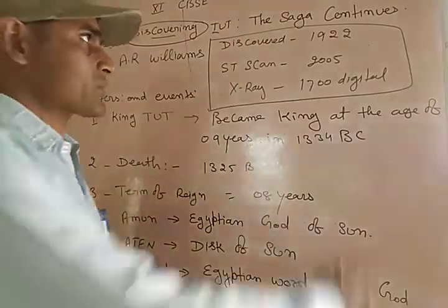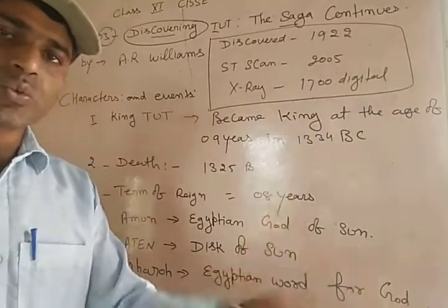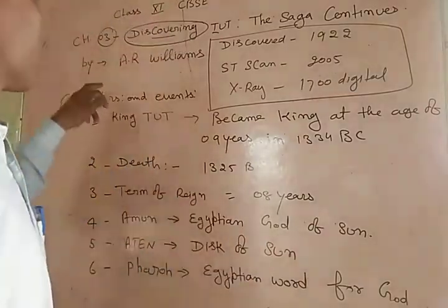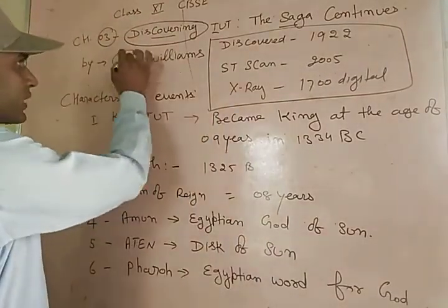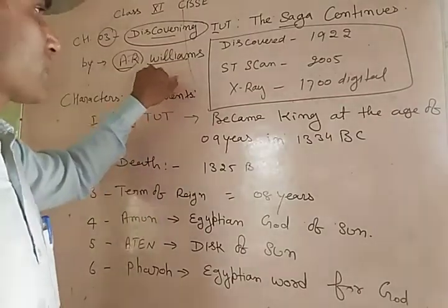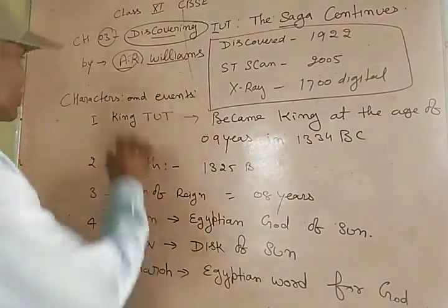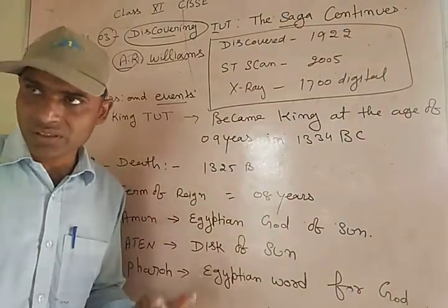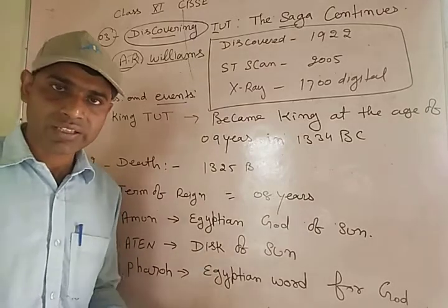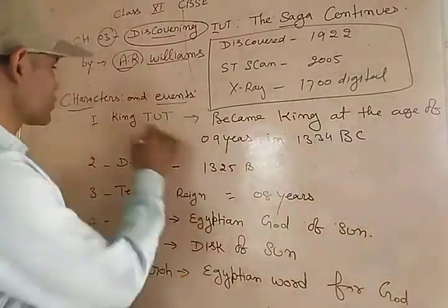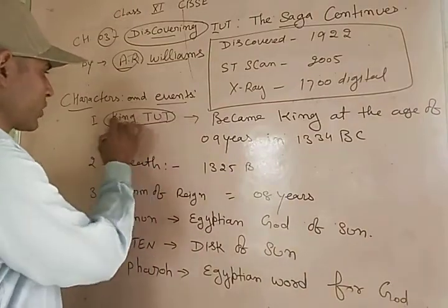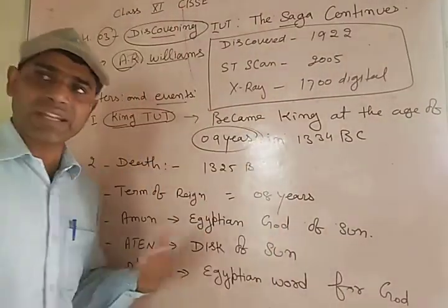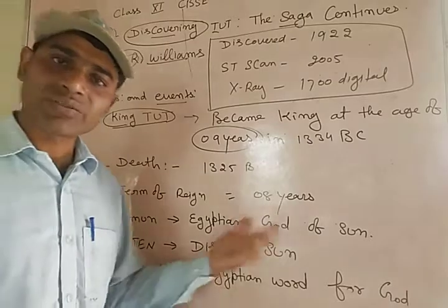The saga means here the story is continuous — what is given inside the chapter we will treat deeply. Next, it is written by A.R. Williams. A.R. Williams wrote this lesson. In this lesson, firstly we will study the characters and events. The first key character is the king — he became the king at the age of nine years. Can you imagine that? At the age of nine, he became the king.